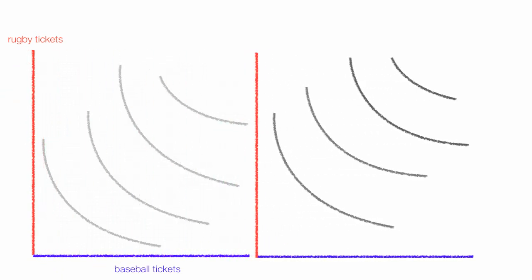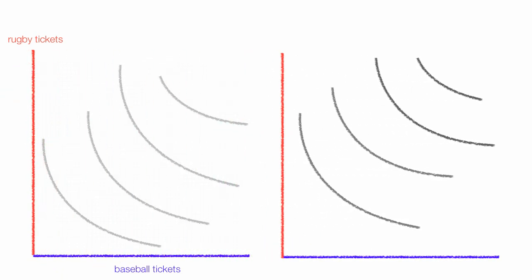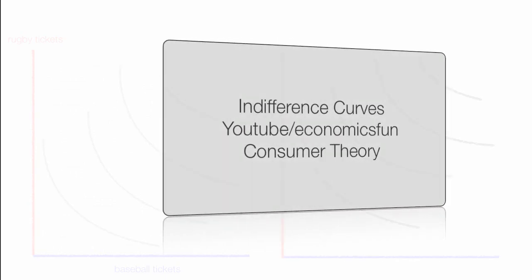Now I'm going to pull the Edgeworth diagram apart into its two components. It turns out the Edgeworth box diagram is just two indifference curves plotted on top of each other.